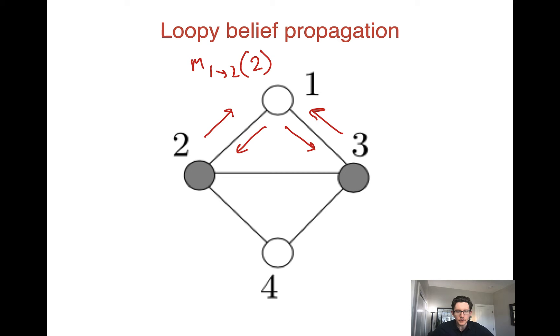which is that in normal belief propagation, we have to start from a leaf. But in a graph with cycles, there might not even be a leaf. This graph is a good example. So what do we do? Well, first thing we're going to do is we're just going to initialize the messages to something, for example, the uniform distribution might be a reasonable starting point. So we've initialized all our messages.